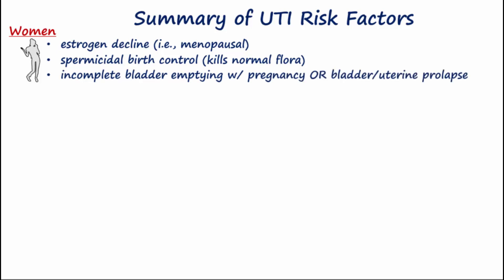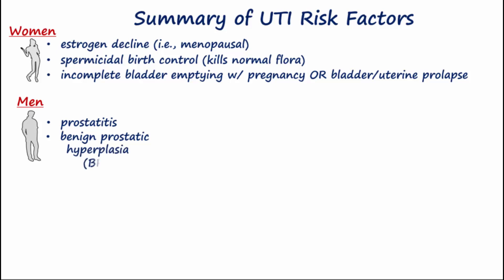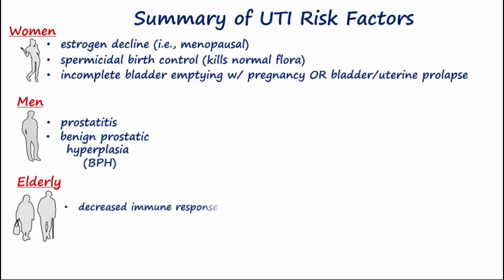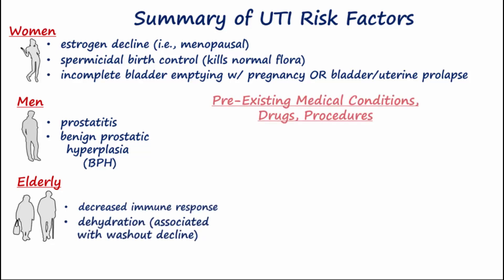For men, prostatitis and benign prostatic hyperplasia increase risk by blocking urine outflow. The elderly have decreased immune function and tend to be more dehydrated, which increases the risk. Kidney stones block the normal flow of urine, compromising the washout phenomenon.